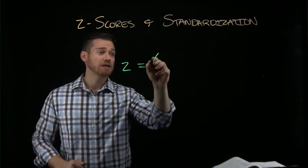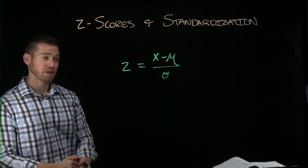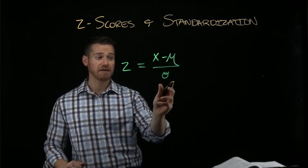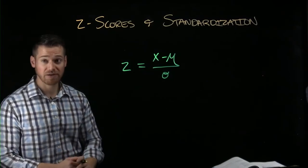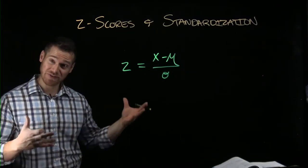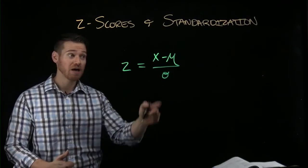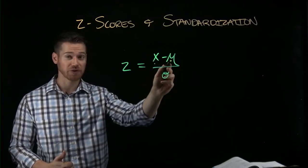So x minus μ over σ equals z. And what this means is we take some score of x, we get how far it is from the mean, and then we are going to standardize that by dividing by the standard deviation. So every z-score is measured in standard deviation units. So a z-score of two is two standard deviations above the mean, because for this to be positive, x must be larger than μ.